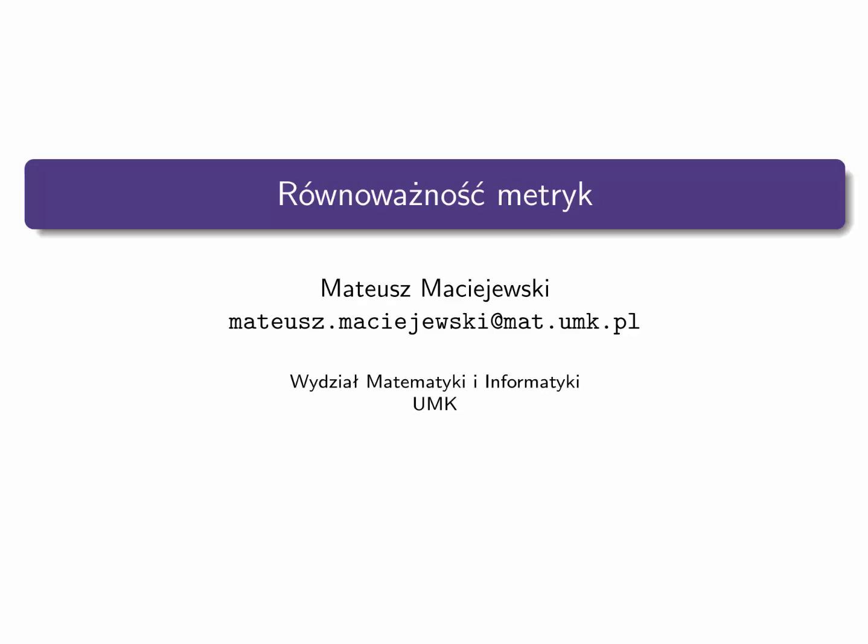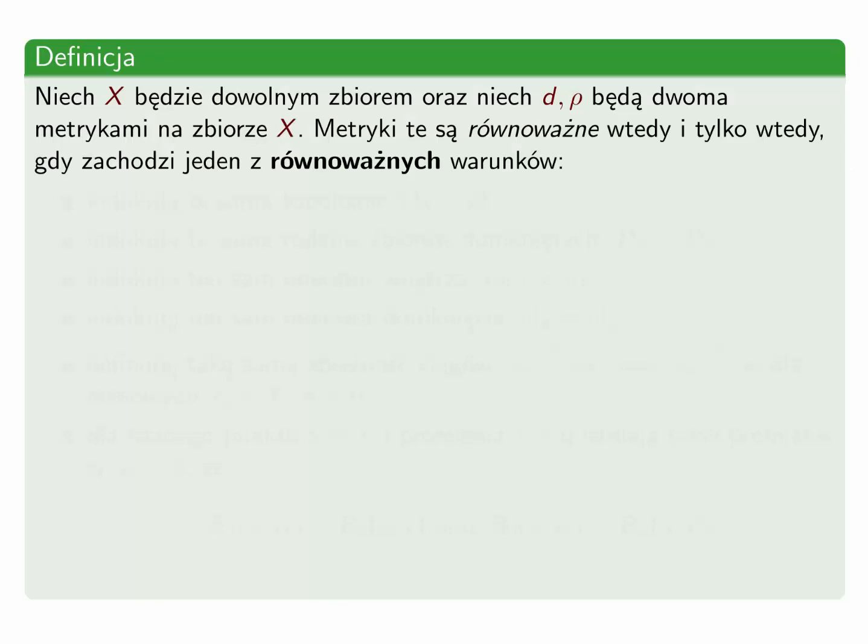Na danym zbiorze można rozważać więcej niż jedną metrykę. W tym wykładzie zajmę się sytuacją, w której dwie metryki są topologicznie równoważne. Precyzuje to definicja. Niech x będzie dowolnym zbiorem oraz niech d i ρ będą dwoma metrykami na tym samym zbiorze x. Metryki te są równoważne wtedy i tylko wtedy, gdy zachodzi jeden z równoważnych warunków. Tutaj jest sześć równoważnych warunków, co oznacza, że jeśli spełniony jest jeden warunek, to spełnione są wszystkie pozostałe. I w tej sytuacji mówimy, że te dwie metryki są równoważne.